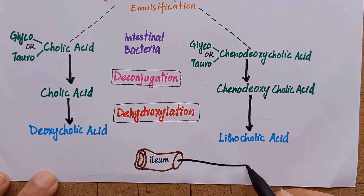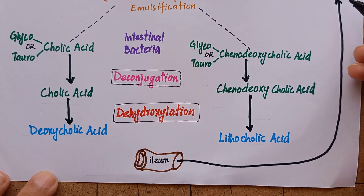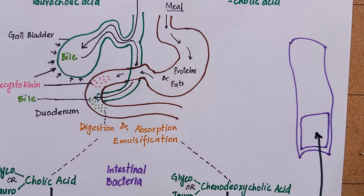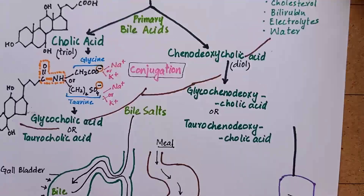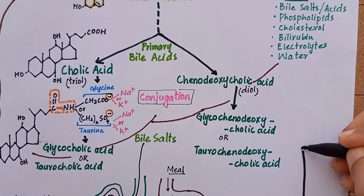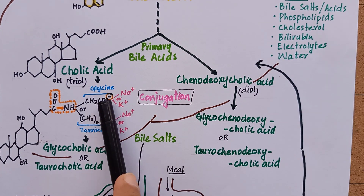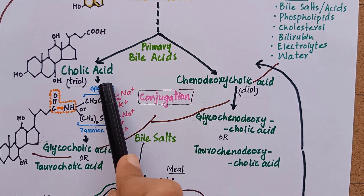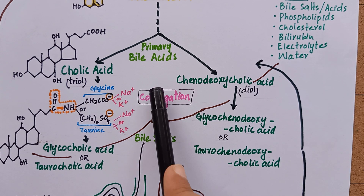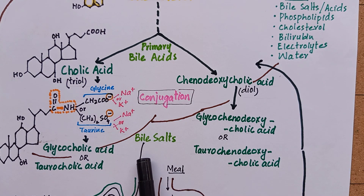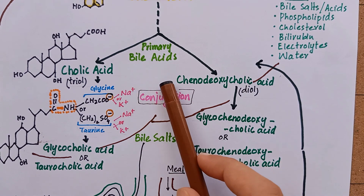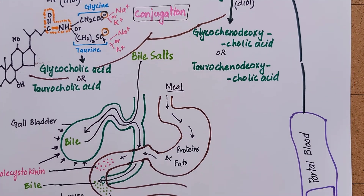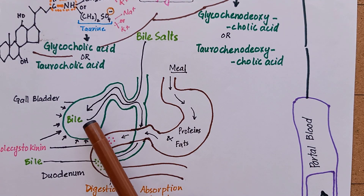The mixture of bile salts and bile acids is absorbed back from the ileum and is transported into the portal blood. It is actively taken up by hepatocytes. The liver converts both primary and secondary bile acids again into bile salts by conjugation with glycine and taurine and secretes them into bile again.